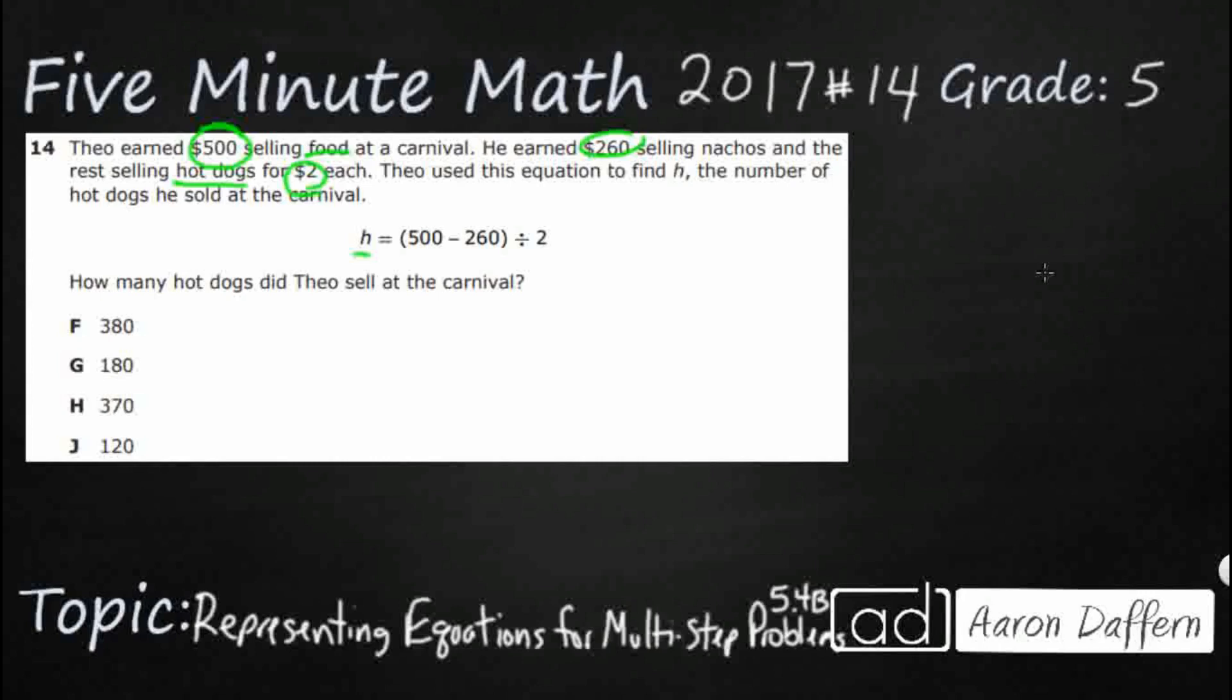So, if we've got this total here of, let's say we've got $500. That's the total that he earned. They gave us that right at the very beginning. And then he sold nachos for $260.